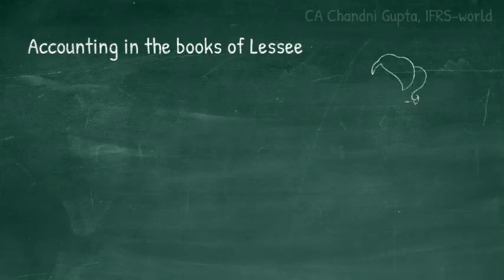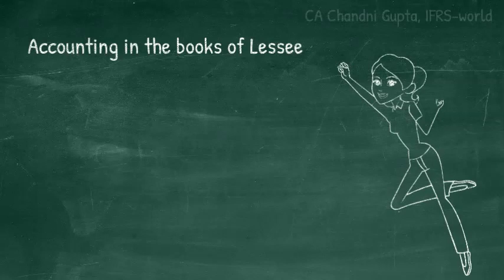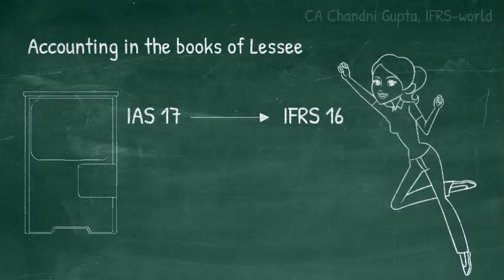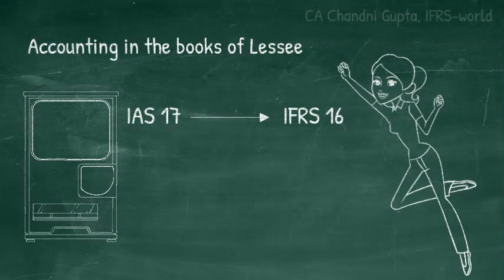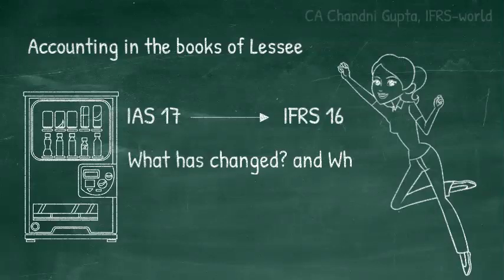Earlier IAS 17 was applied for accounting of leases, but then IFRS 16 was brought in. The major difference between these two standards is in the accounting treatment of lease in the books of lessee. The accounting treatment for lessor has not been changed that much, but for lessee it has been changed drastically. So now we'll figure out what has been changed and why. Let's take an example.